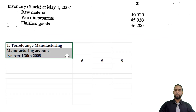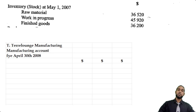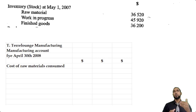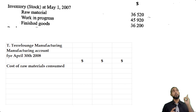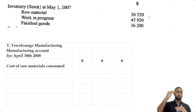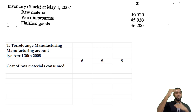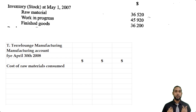Don't forget to head up your statement properly: T Terralounge Manufacturing, Manufacturing Account, for the year ended April 30th, 2008. The first thing we start with is the cost of raw materials consumed. If you need a refresher on how to do a manufacturing account, I strongly suggest checking out my manufacturing account video tutorial — I break it down into pieces and then put the pieces together, which gives you a longer format but helps you remember things better.